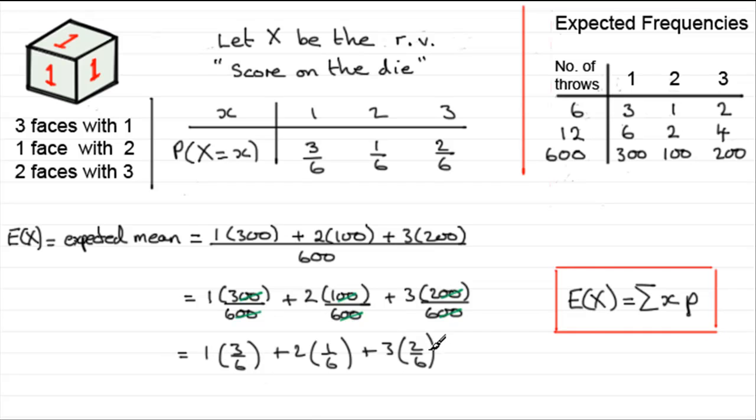So what was E of X for our particular probability distribution? Well, if you work this out, 1 times 3/6, 2 times 1/6, 3 times 2/6, what you get is 11 sixths. 11 sixths or 1 and 5 sixths. That's the expected mean E of X for our distribution table.